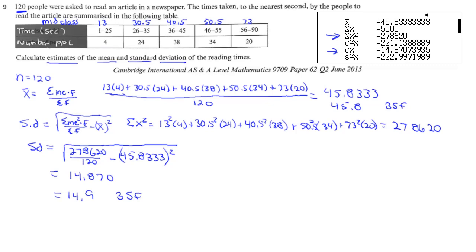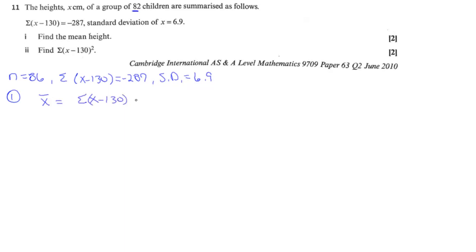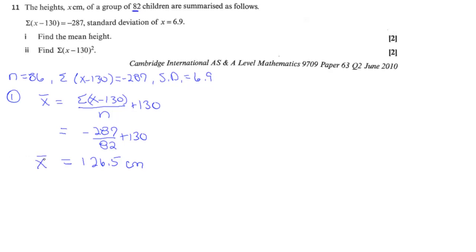Problem eleven: heights of 82 children with coded data, where the sum of (x minus 130) equals negative 287 and the standard deviation is 6.9. In part one, we find the actual mean height. We take the sum of (x minus 130) divided by n, then add back the 130. Filling in the values gives a mean of 126.5 centimeters.